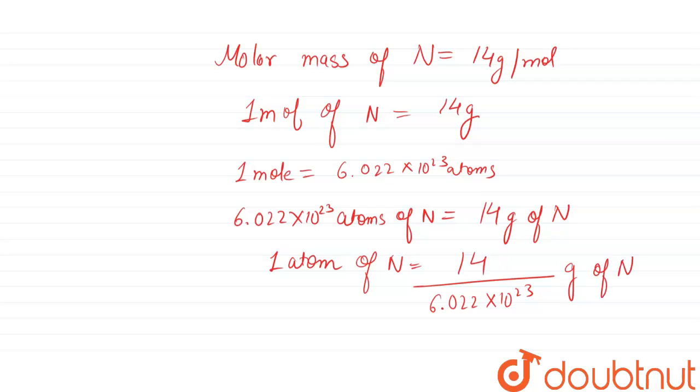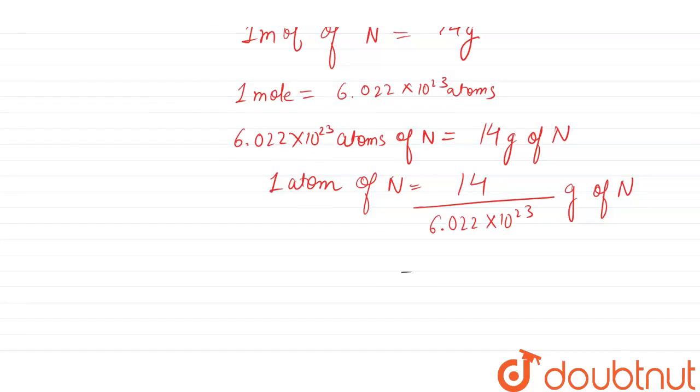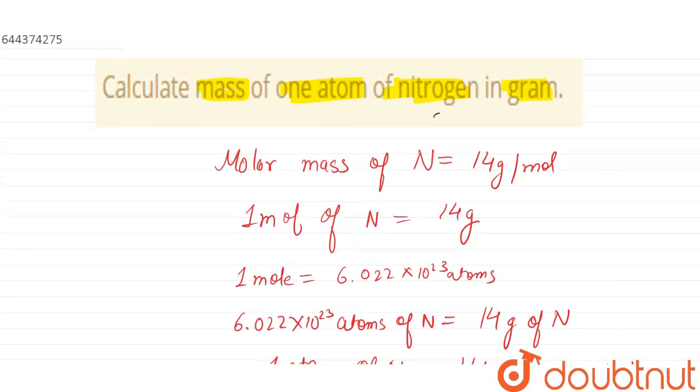On calculating this value, we get 2.32 into 10 to the power 23 grams. So this is the mass of one atom of nitrogen in grams: 2.32 into 10 to the power 23 grams. Thank you.